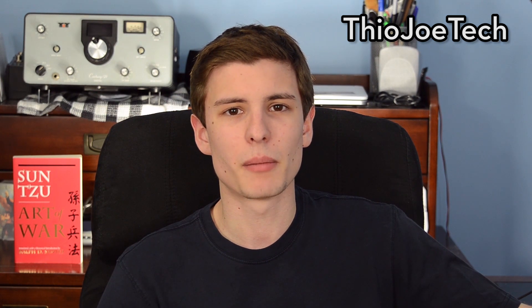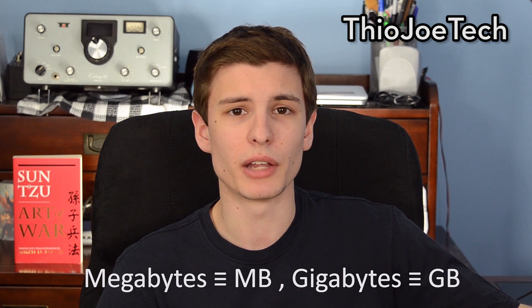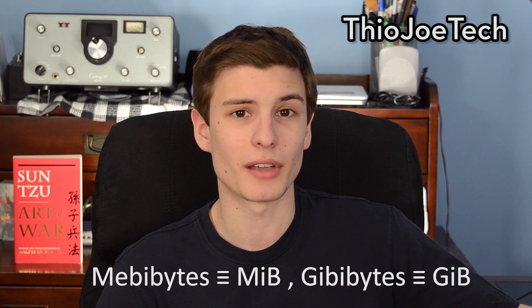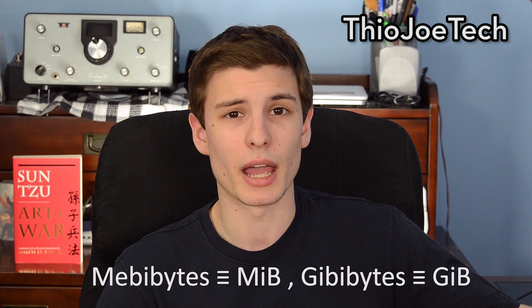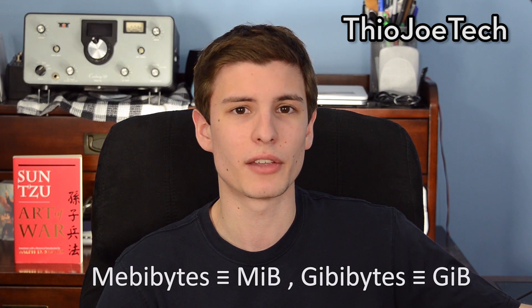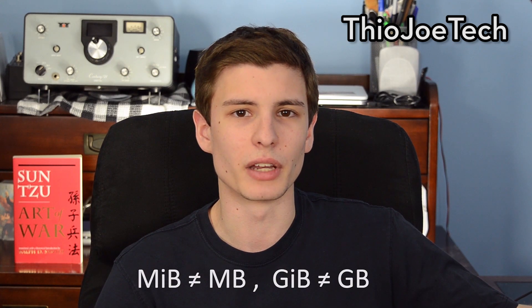You almost definitely have not heard of these units, so I'll try to break it down. The megabyte unit is MB — capital M, capital B — and gigabytes is capital GB. But gibibytes is capital G, lowercase i, capital B, and mebibytes is capital M, lowercase i, capital B. So while Windows is truly measuring in gibibytes and mebibytes, it's displaying megabytes and gigabytes.